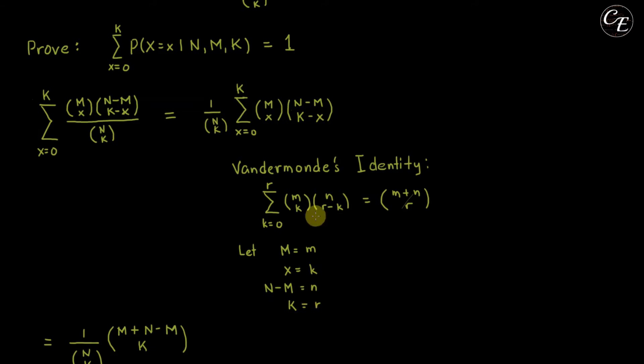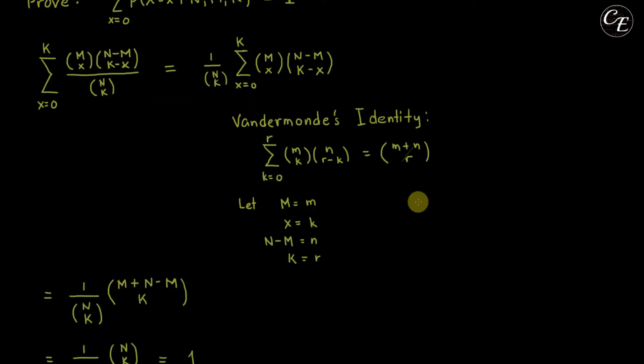Then this one will become like this one. And here we have this one will be equal to this one. The constant is this one. And this summation which is equal to this one is small m which is capital M plus small n which is capital N minus capital M. Then r is capital K.